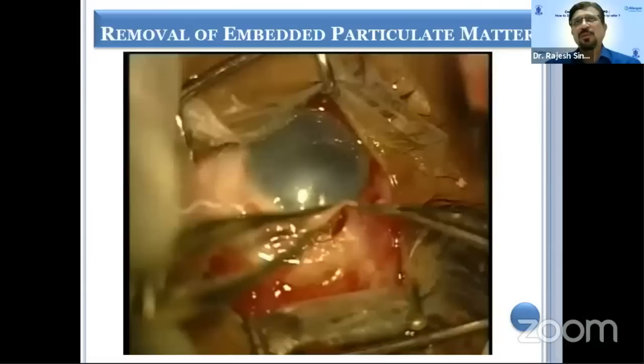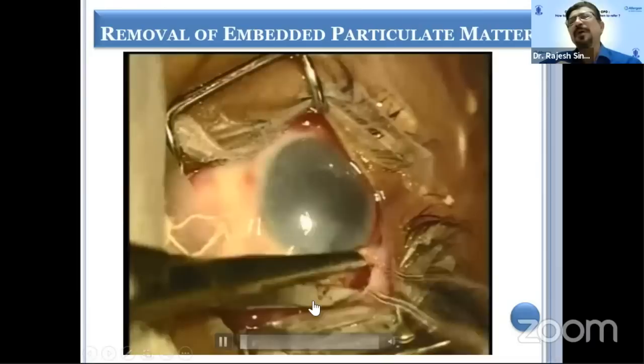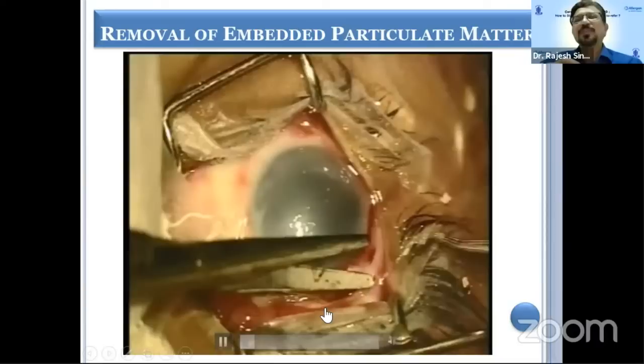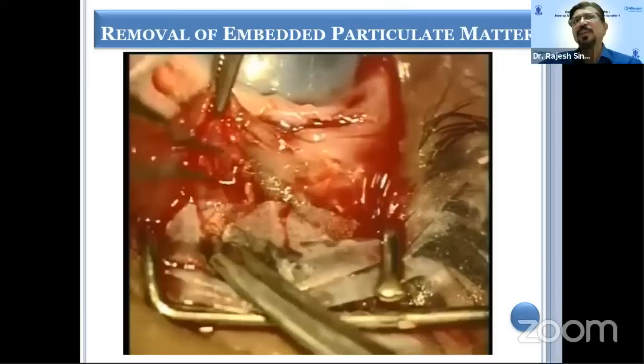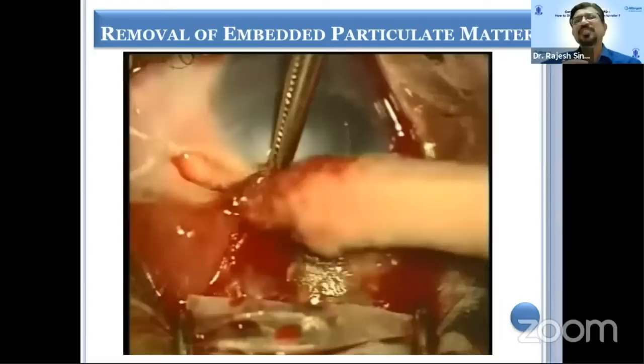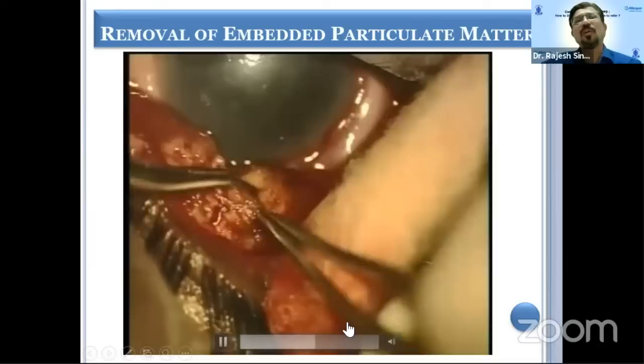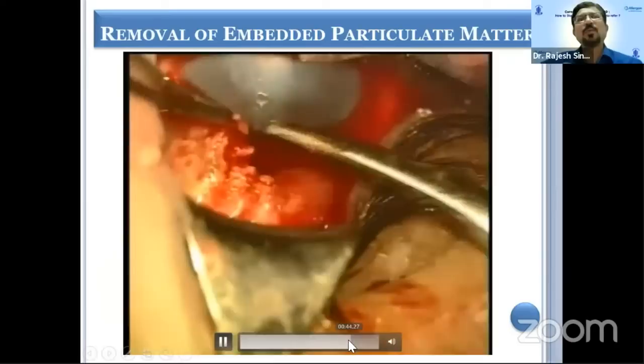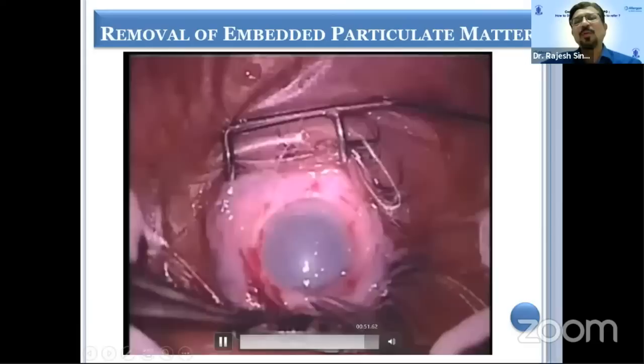Sometimes particulate matter goes deep underneath the conjunctiva. In that case, you cannot leave any particulate matter because that will cause persistent damage, more and more episcleral ischemia, then scleral ischemia, scleral melting. It is very essential to remove the particulate matter even by going underneath the conjunctiva, removing all the chemical agent from underneath. Once done, you can put an amniotic membrane over the surface and it will heal.